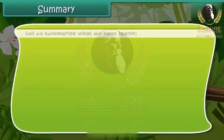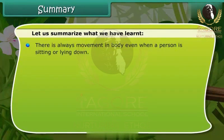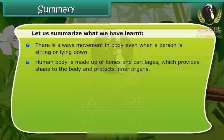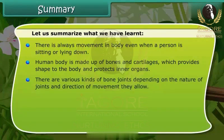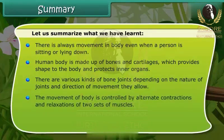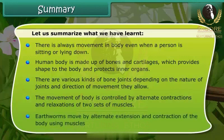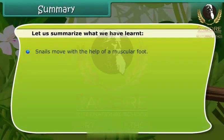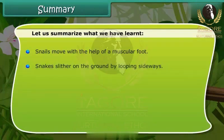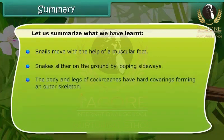Let us summarize what we have learnt. There is always movement in the body even when a person is sitting or lying down. The human body is made up of bones and cartilage, which provides shape to the body and protects inner organs. There are various kinds of bone joints depending on the nature of joints and direction of movement they allow. The movement of the body is controlled by alternate contractions and relaxations of two sets of muscles. Earthworms move by alternate extensions and contractions using muscles. Snails move with the help of a muscular foot. Snakes slither on the ground by looping sideways. The body and legs of cockroaches have hard coverings forming an outer skeleton.